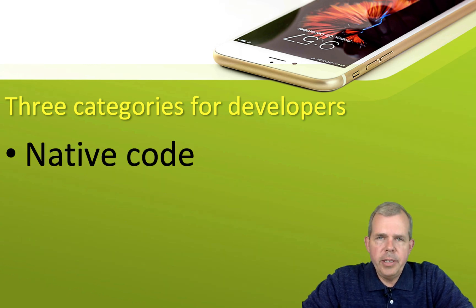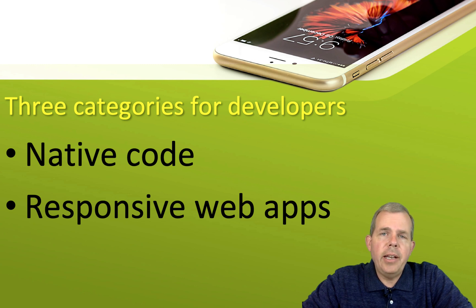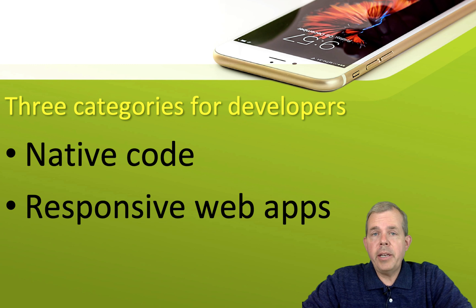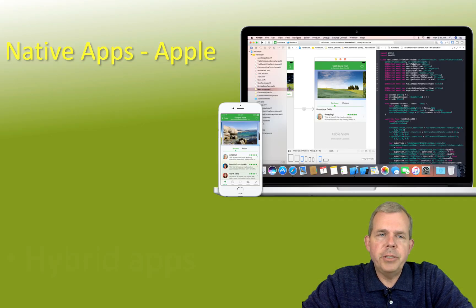First of all, there's native code — this is Android Studio, this is Xcode with Apple — and you're creating code that runs specifically for that phone. Also there are ways to create web pages called responsive design, and if you're a good web developer, you should think mobile first and you might not even have to create an app. The third category, the most involved, is hybrid apps using technologies originally designed for web pages but adapted to work on phones.